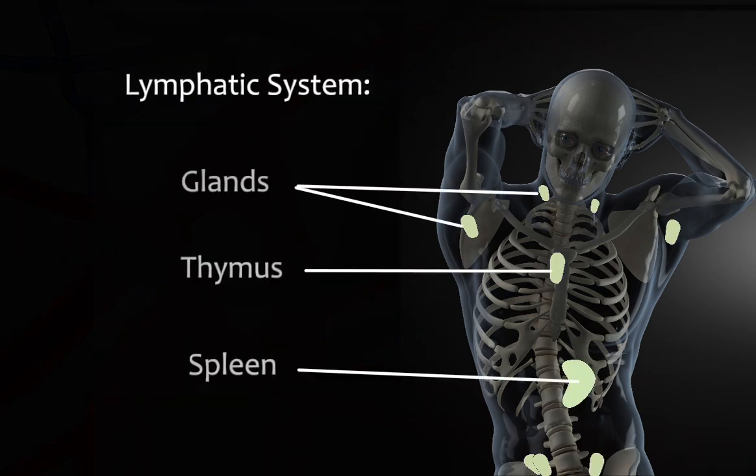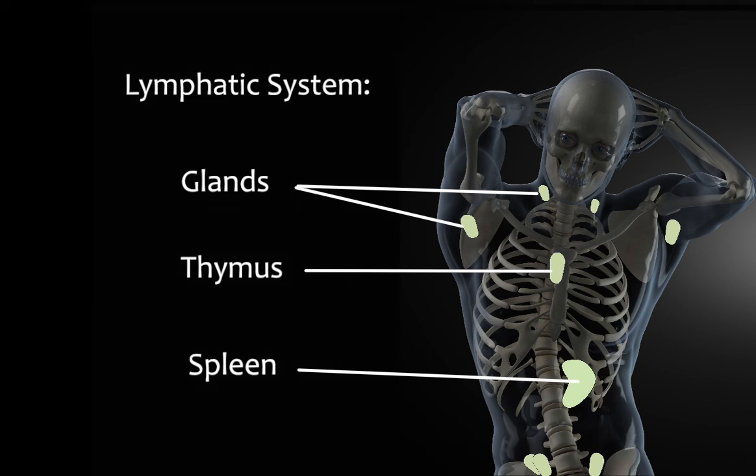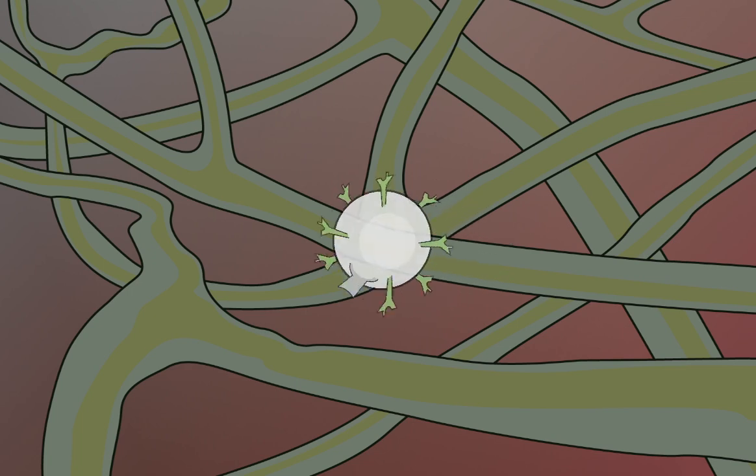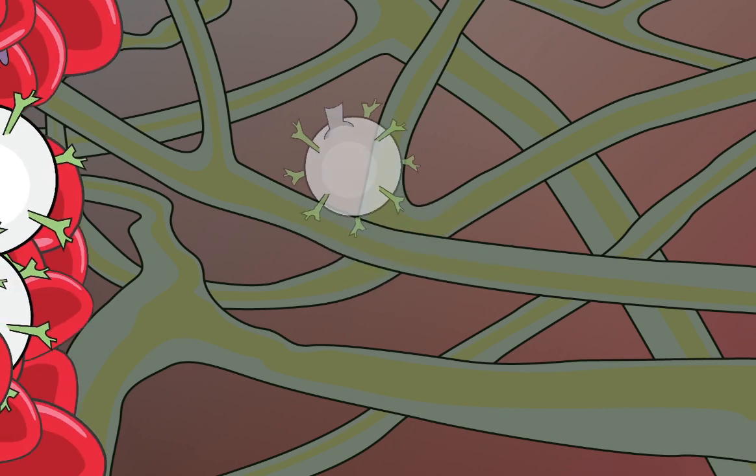But before we look at how these systems work together to do all this, let's first look at the story of our blood, which begins with a hematopoietic stem cell in our bone marrow. Which we'll see in our next video.